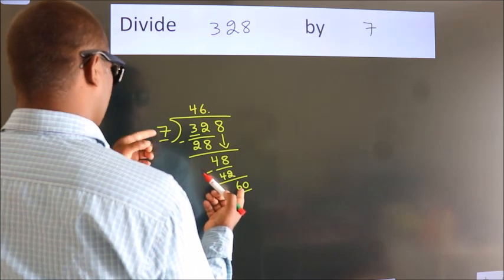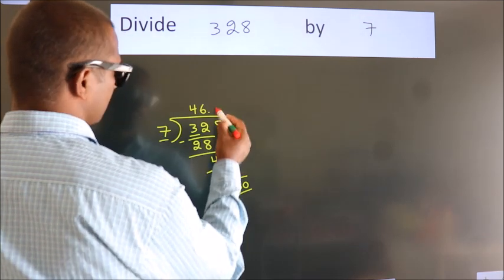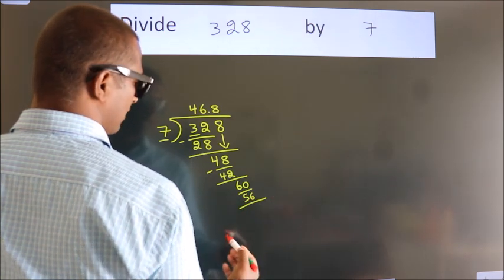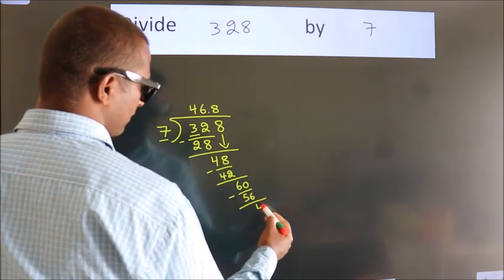A number close to 60 in the 7 table is 7 eights, 56. Now we subtract. We get 4.